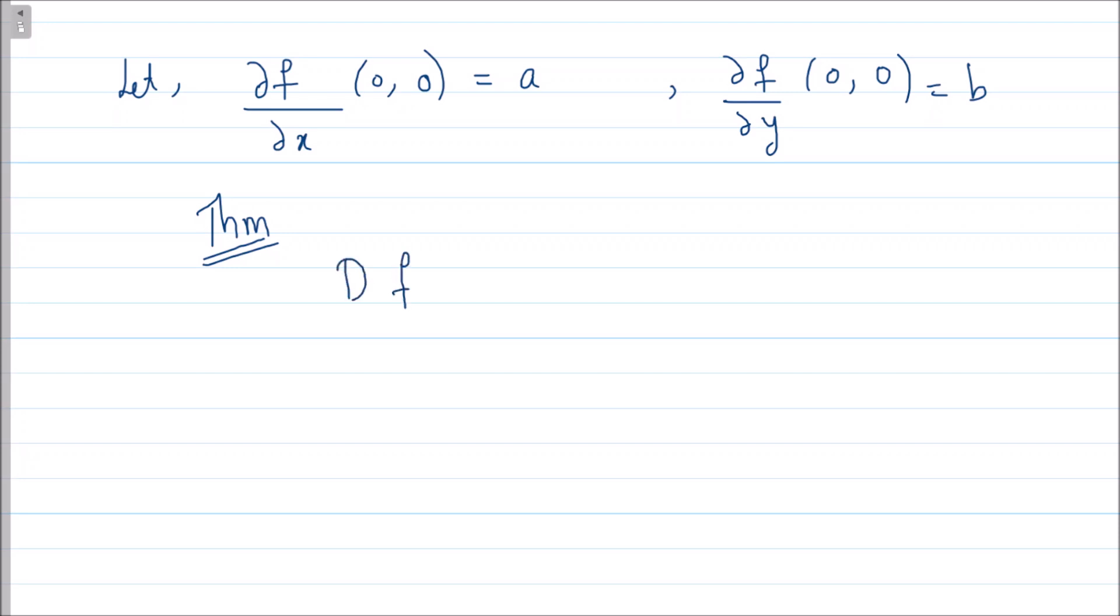Directional derivative of a function at the point (a₀, b₀) in the direction u is nothing but the dot product between the direction vector, which is a unit vector, and the gradient of the function at that point (a₀, b₀).